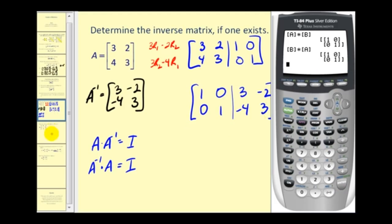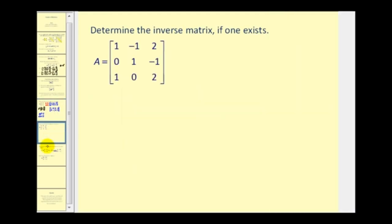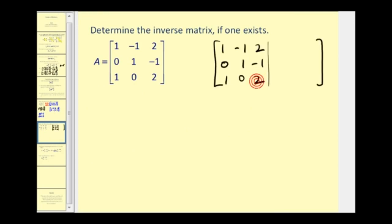Let's see if we can find a three by three inverse matrix. We're going to have a three by six augmented matrix, with matrix A on the left and the identity matrix on the right. We want the matrix on the left to become the identity matrix, with these elements becoming zero and the main diagonal becoming ones.